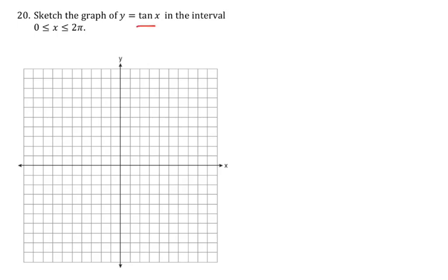Number 20: for the tangent graph, remember that vertical asymptotes occur at π/2. Assuming two boxes equal π/2, the next marks are π, 3π/2, and 2π. In the first quadrant, tangent is positive so the graph goes up; it comes down on the other side of the asymptote. The same pattern repeats in the second quadrant with negative values. That gives us our tangent graph.